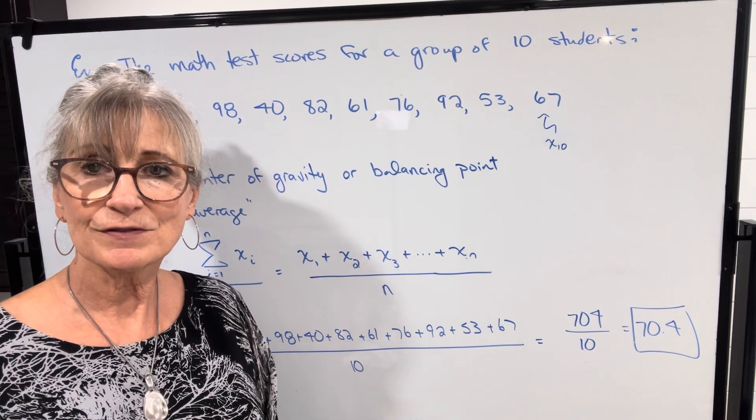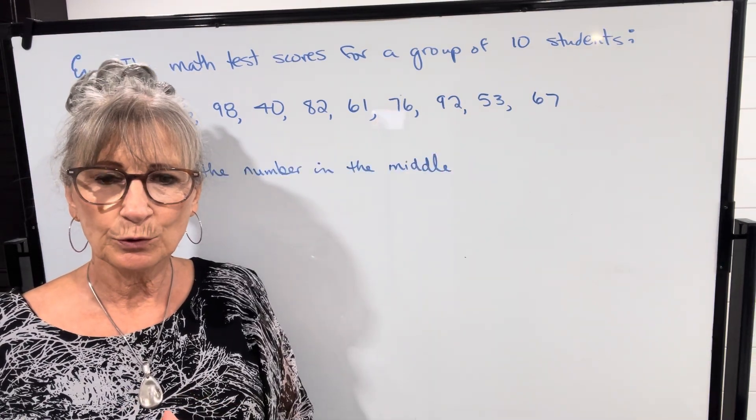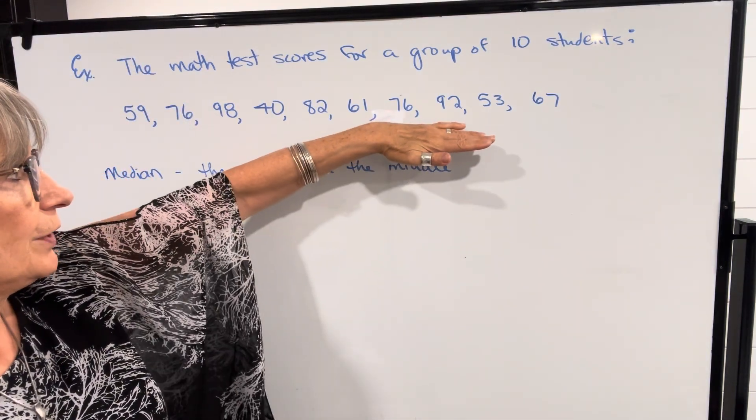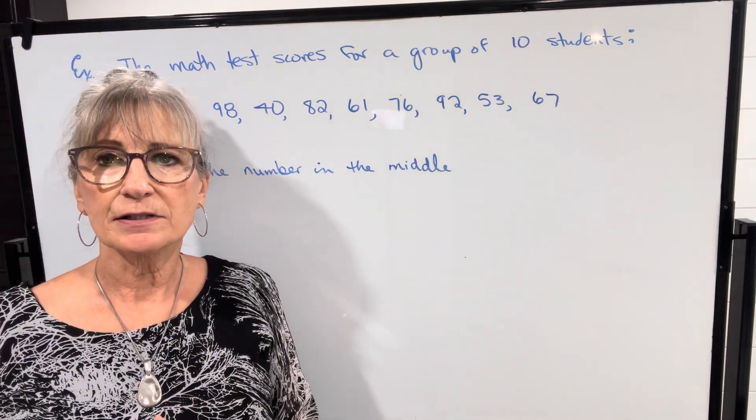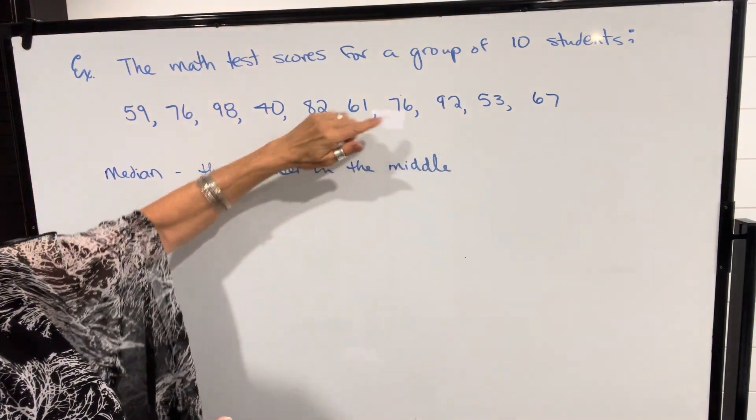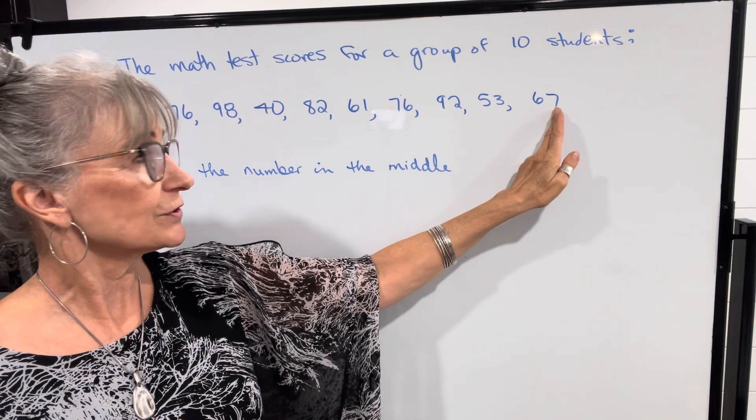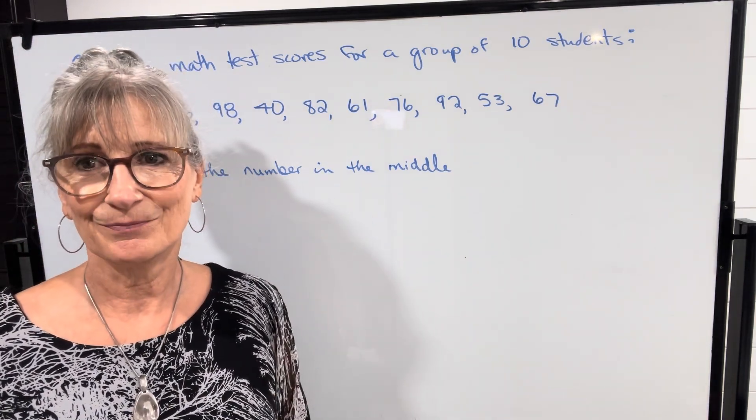However, there are two other measures of central tendency. Before I talk about median and mode, I forgot to mention that when you're finding the mean, the standard practice is to go one more decimal place than what the data is. In this case, we knew all the test scores to the nearest unit. Therefore I rounded to one decimal place when I gave the mean.